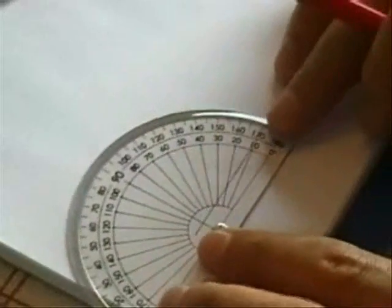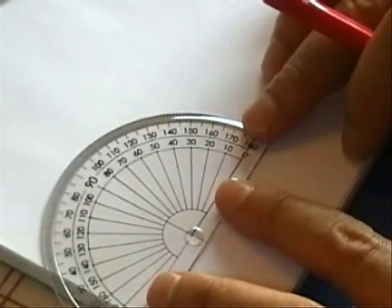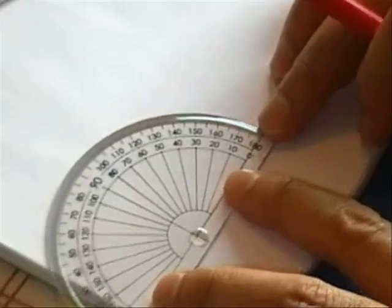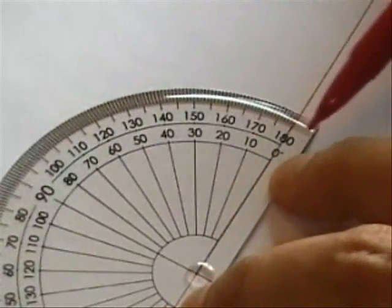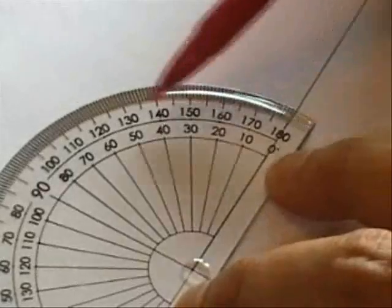So I will measure 40 degrees and I'll do it from this side here. Again, crossbow making sure that it goes through zero and again the inside scale: 0, 10, 20, 30, 40.